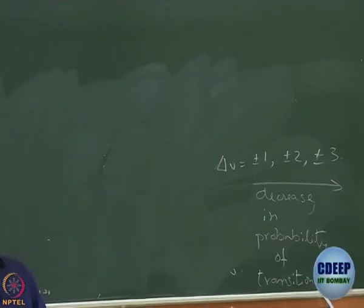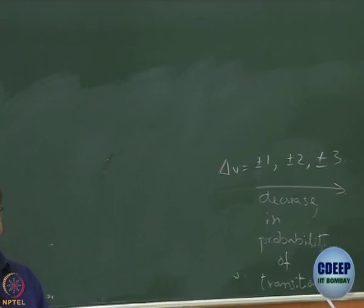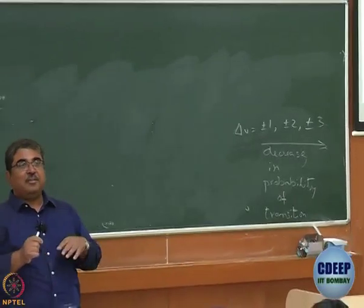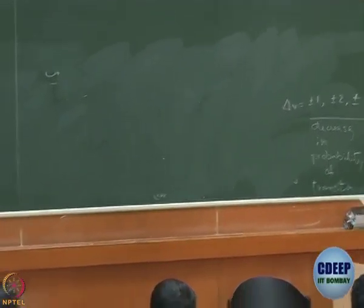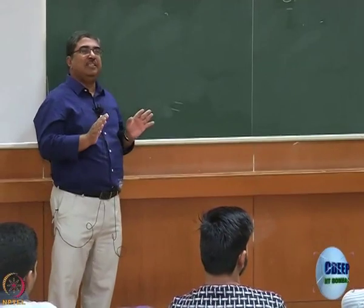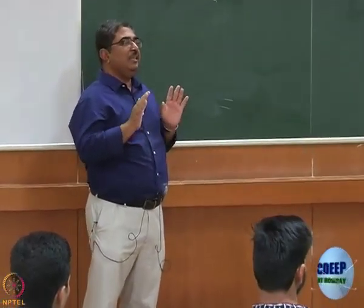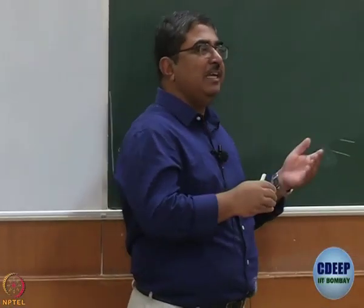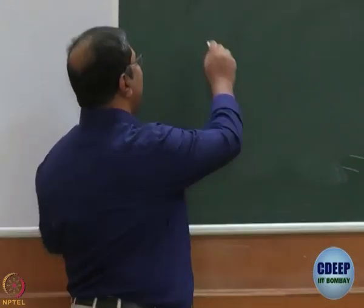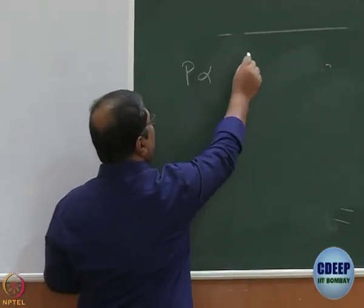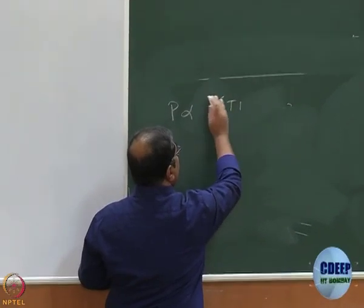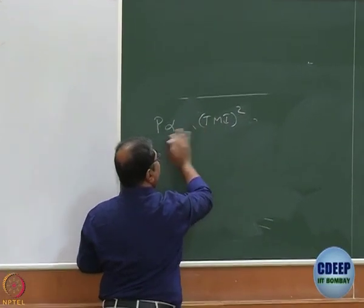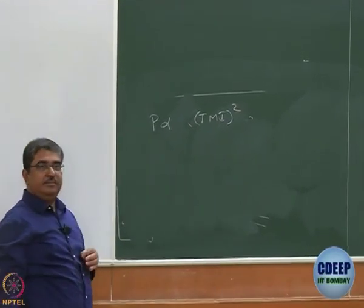How do you determine probability of transition? Probability of transition is proportional to the square of the transition moment integral: ∫ψ_f* μ ψ_i dτ. We are going to prove that in a couple of weeks, but for now just accept that probability of transition is proportional to the square of the transition moment integral.